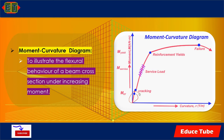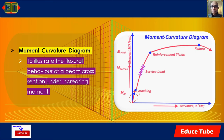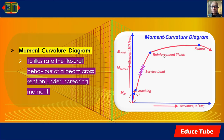When the moment is increased beyond the cracking moment, the slope of the curve decreases a little because the beam is not quite as stiff as it was before the concrete cracked. The diagram is almost a straight line from M_cr to the point where the reinforcement is stressed to its yield point.